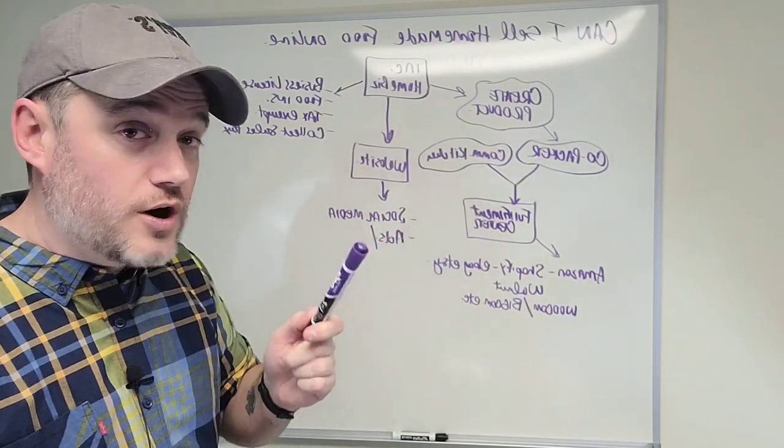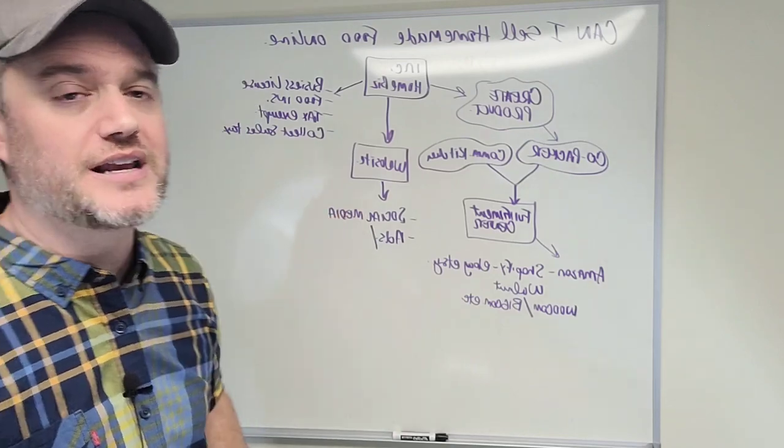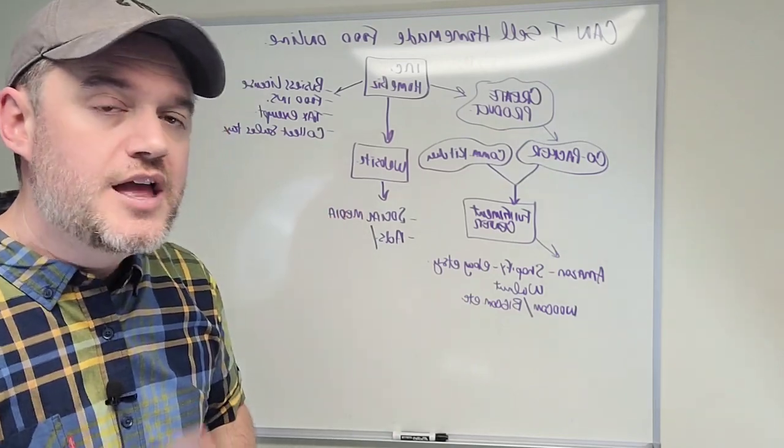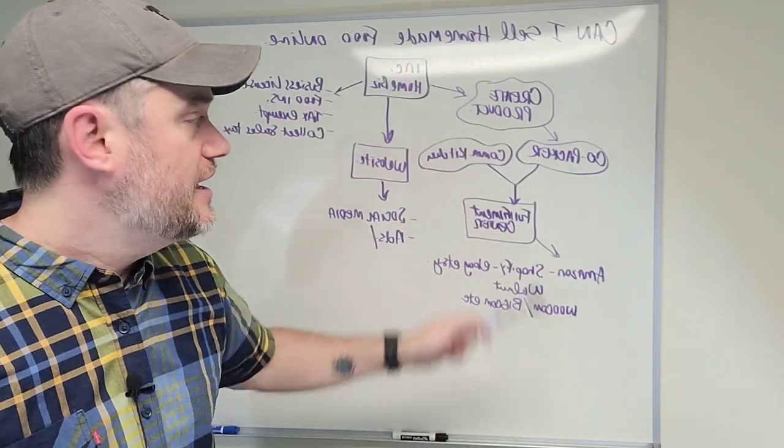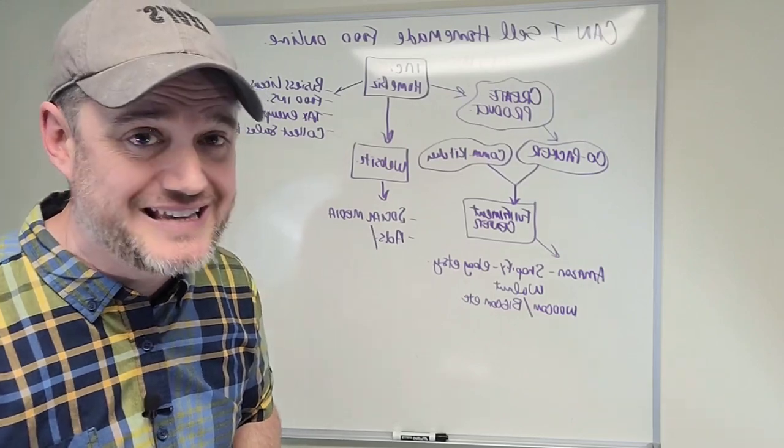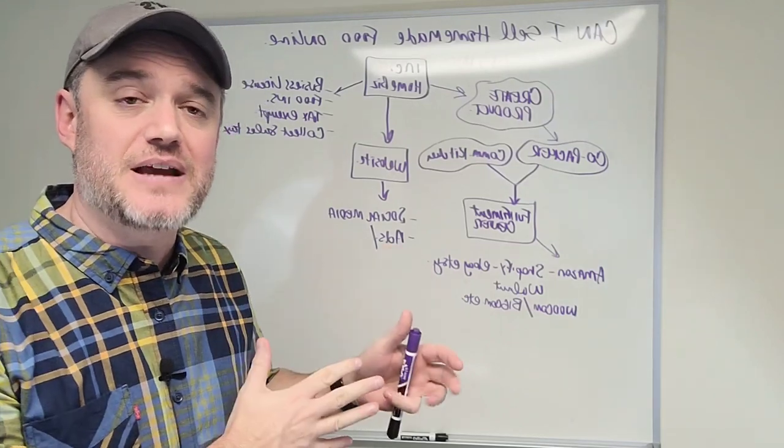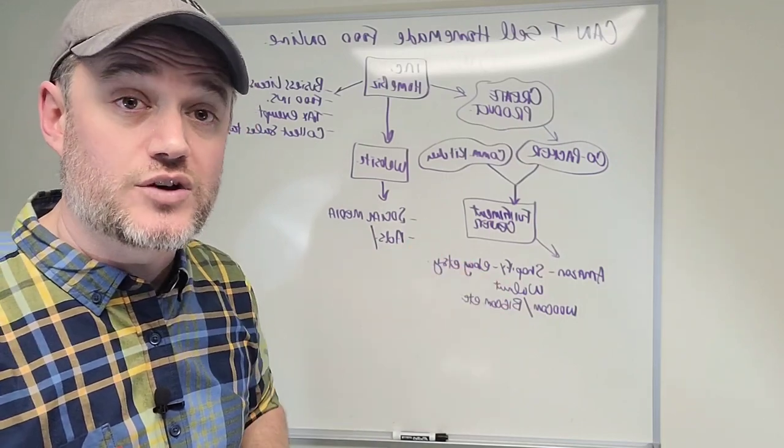Now, your co-packer is one avenue, or you can rent a commercial kitchen. Now, back to what we said before, can I sell a food product from home? Well, technically, the food product is not actually being made at home. It could be produced in a commercial kitchen, which is a rented commissary or commercial space, which is licensed, inspected, and insured by that specific area of that commercial kitchen where it's at.